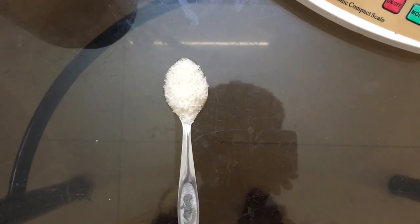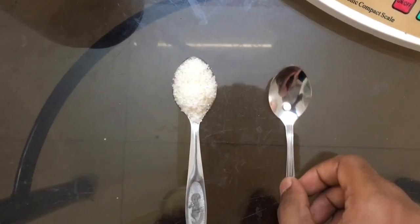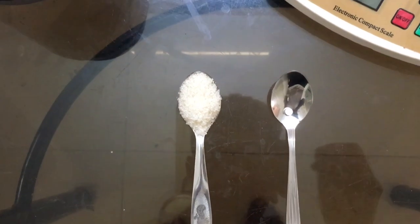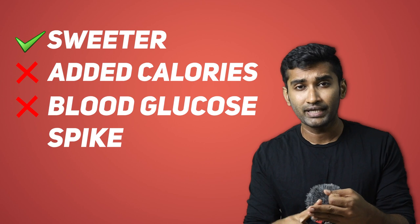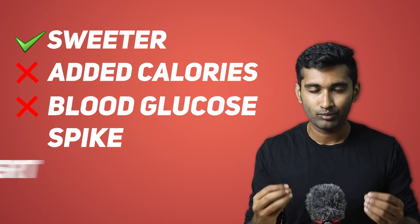In a cup of coffee, you add a tablespoon of sugar. If you add just a pinch of artificial sweeteners, that is sufficient. These artificial sweeteners are inert substances — they pass through our body without being metabolized. Basically, they are sweeter than sugar, have no added calories, and cause no blood glucose spiking.